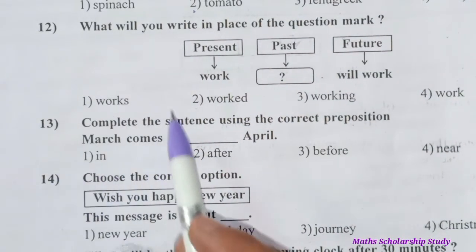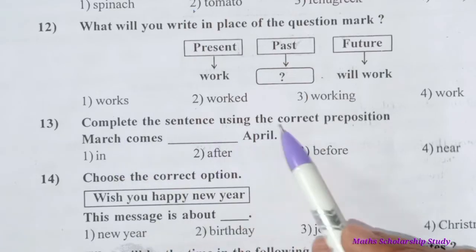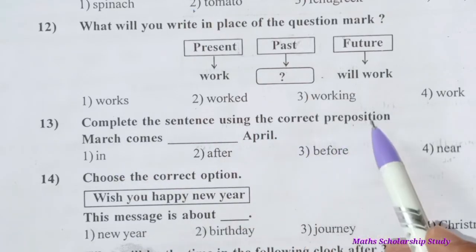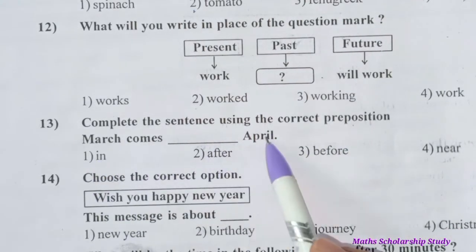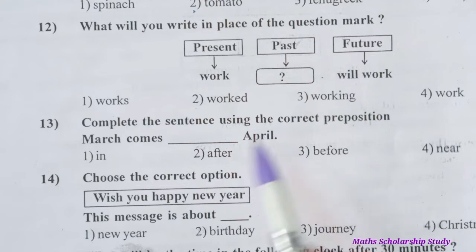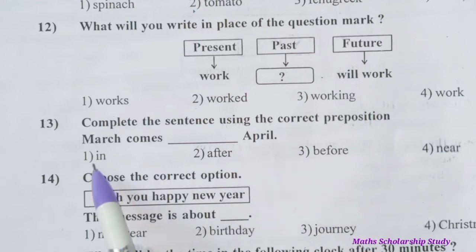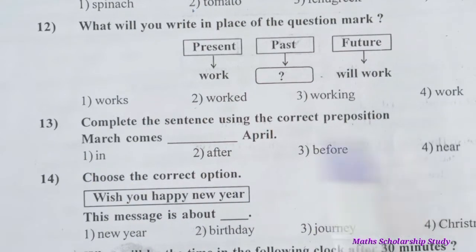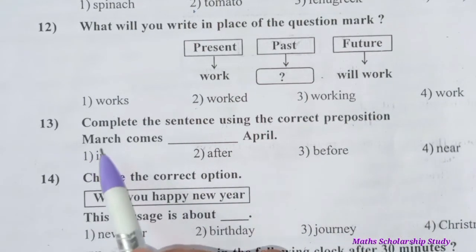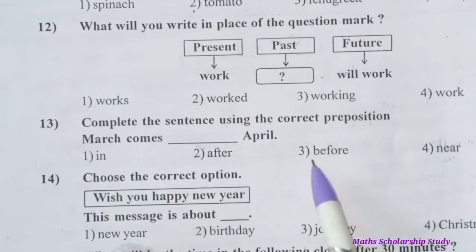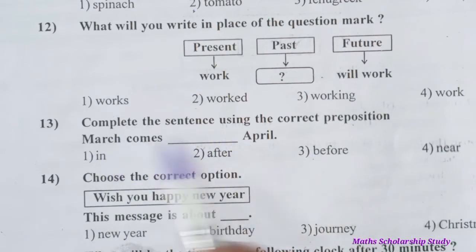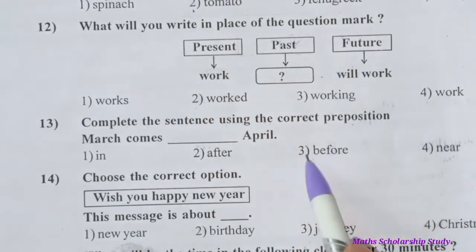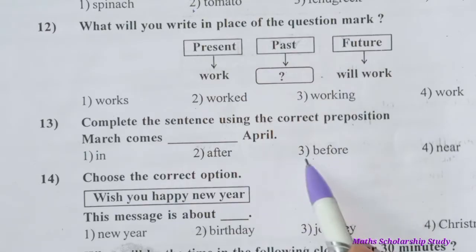Question number thirteen: Complete the sentence using the correct preposition. 'March comes ___ April.' Options are: in, after, before, new year. March comes before April — March is the month that comes before April. Option number three is the correct answer.